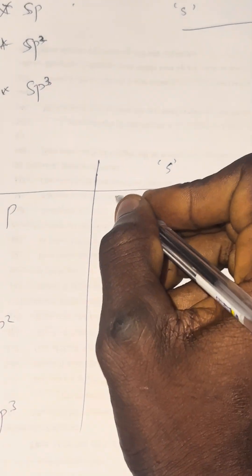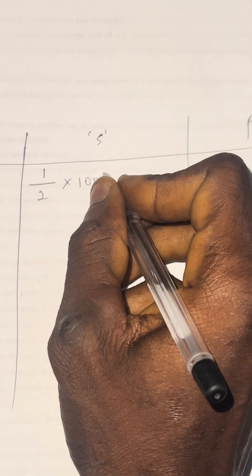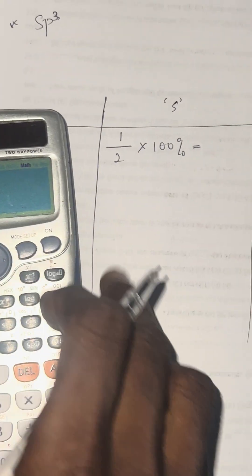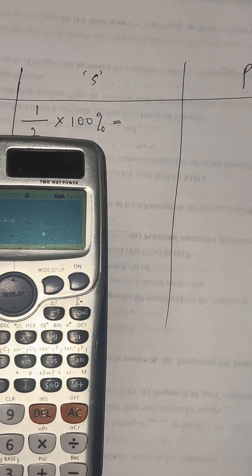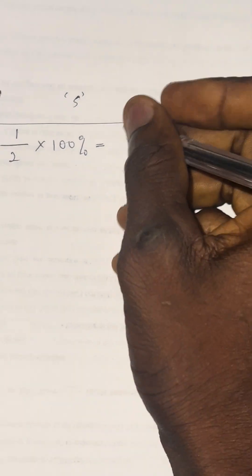Let us see how the calculation goes. For the first one, which is SP, I want to calculate S character first. How many S do we have? We have 1, over the summation of the two — we have S and P, that's 2. Multiply by 100 to find the percentage of S character. That will be 1 over 2, multiplied by 100, which gives us 50%.